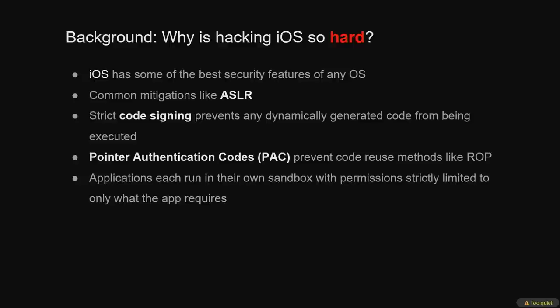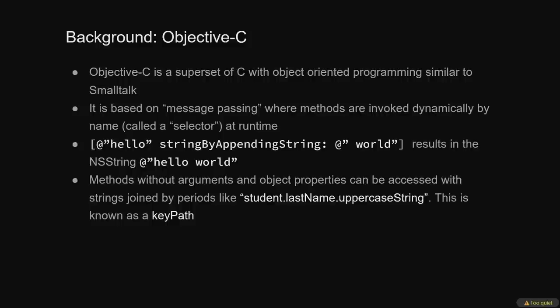All this makes life very difficult for hackers who want a way to reliably perform arbitrary operations dynamically, ideally outside of any sandbox — and it turns out this is exactly what NSPredicates give us. To understand iOS security, we need to understand Objective-C, the language most user space code is written in. It's a superset of C with object-oriented programming concepts added in a Smalltalk-like way, based on message passing where methods are invoked dynamically at runtime by name. These names are called selectors. It's also possible to access properties and call methods using strings concatenated with periods — these are called key paths, and they'll be important in the context of NSPredicates.